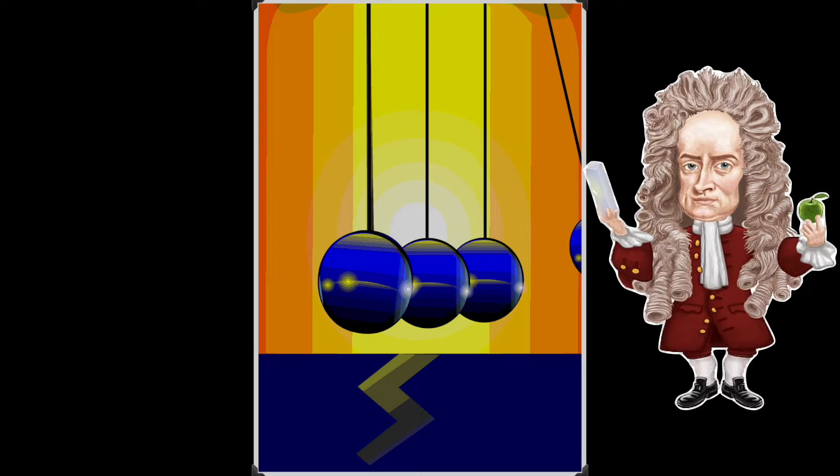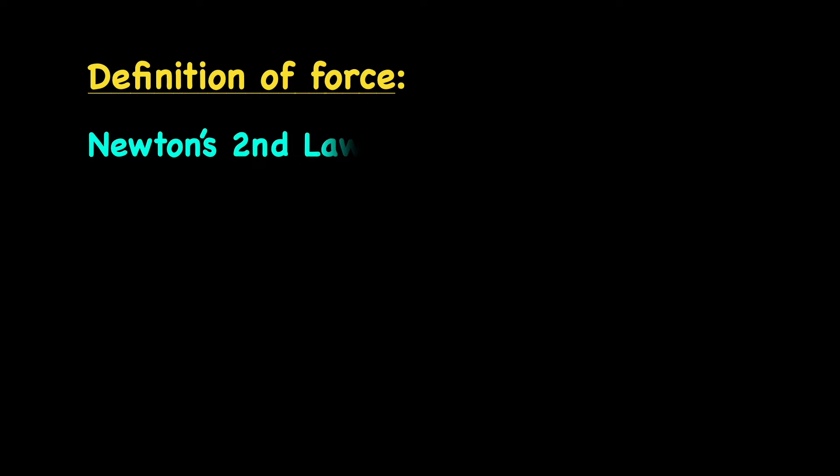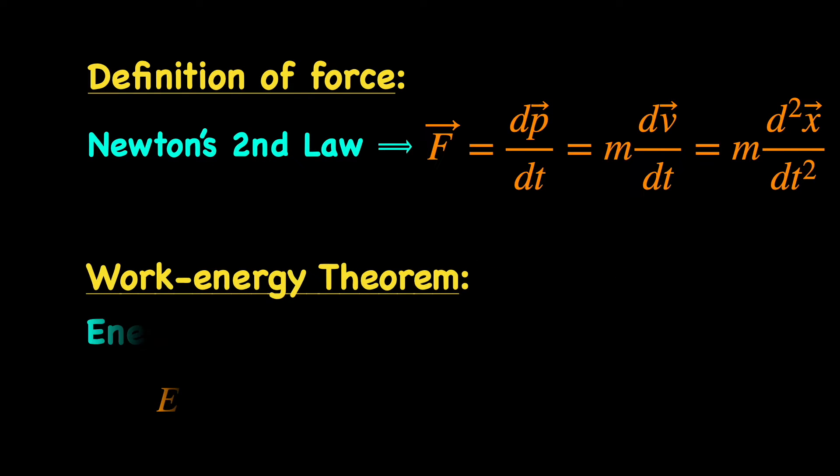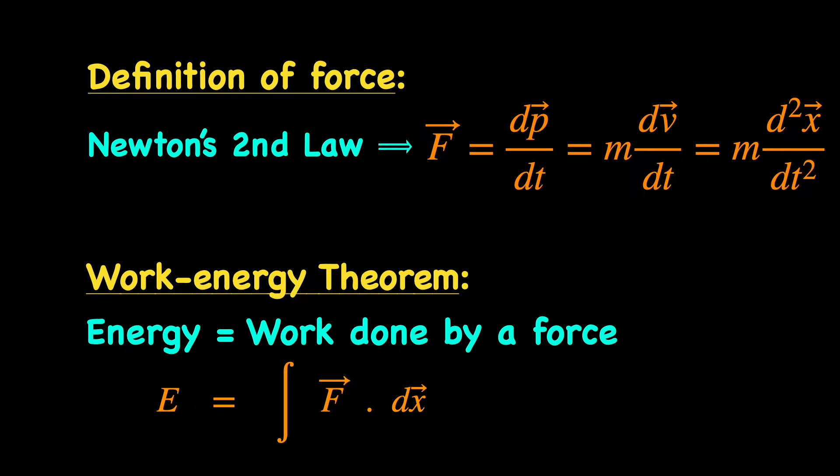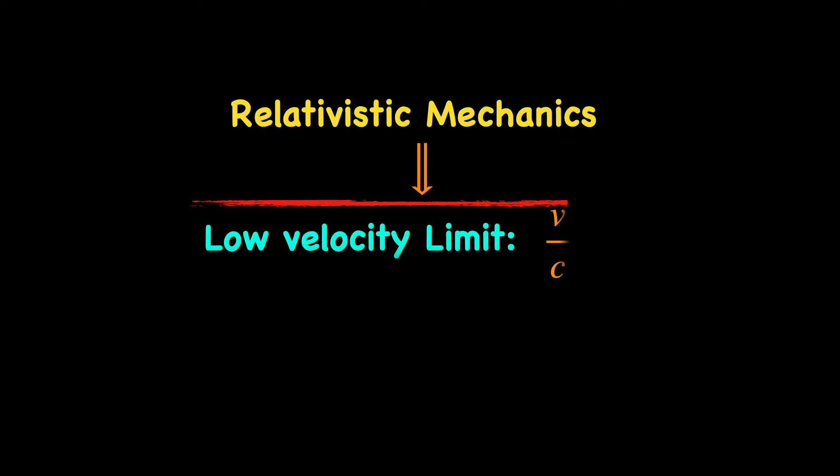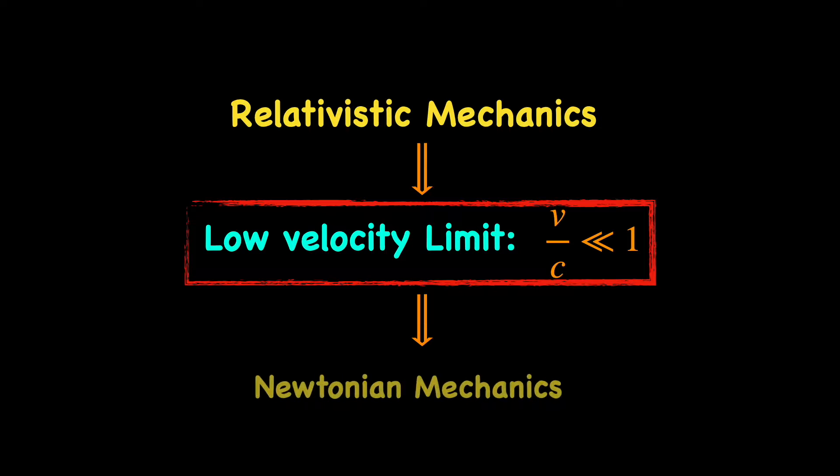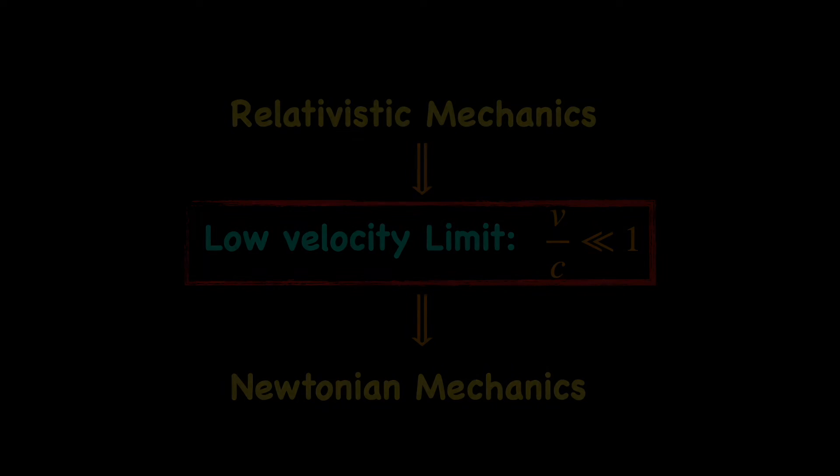It is of course possible to start from Sir Newton's definition of force through his second law of motion and get the relativistic energy as work done by some force. But Newtonian mechanics is essentially the low velocity limit of the fully relativistic mechanics and therefore ideally we should not rely too much on it.